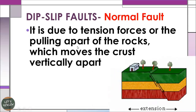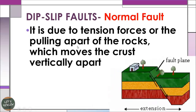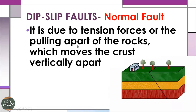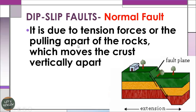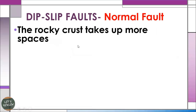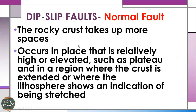The normal fault is due to tension forces, or the pulling apart of rocks, which moves the cracks vertically apart. It occurs in places that are relatively high or elevated, such as plateaus, and in regions where the crust is extended or where the lithosphere shows an indication of being stretched.